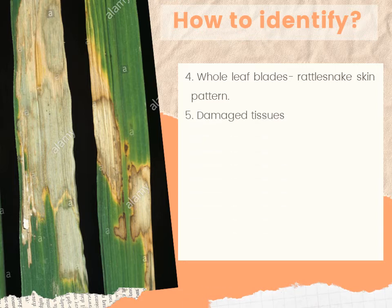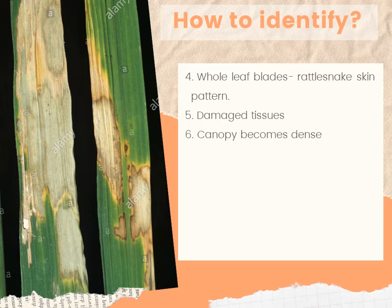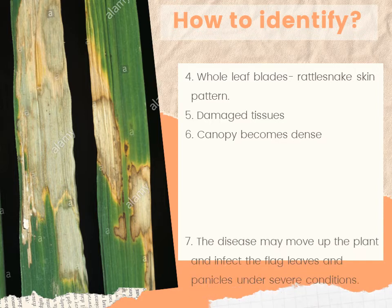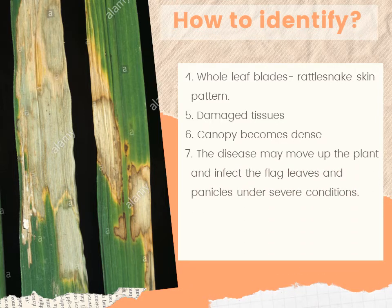These damaged tissues interrupt the normal flow of water and nutrients to the plant tissue above — including leaves and panicles. As the plant approaches heading, the canopy becomes dense, creating a humid microclimate favorable for rapid disease development. The disease may move up the plant and affect flag leaves and panicles. The fungus can spread into culms from early sheath infections and weaken them, resulting in lodging and collapse. Damage ranges from partial infection of lower sheaths with little impact on grain filling to premature death of plants and lodging with significant reduction in grain yield and quality.